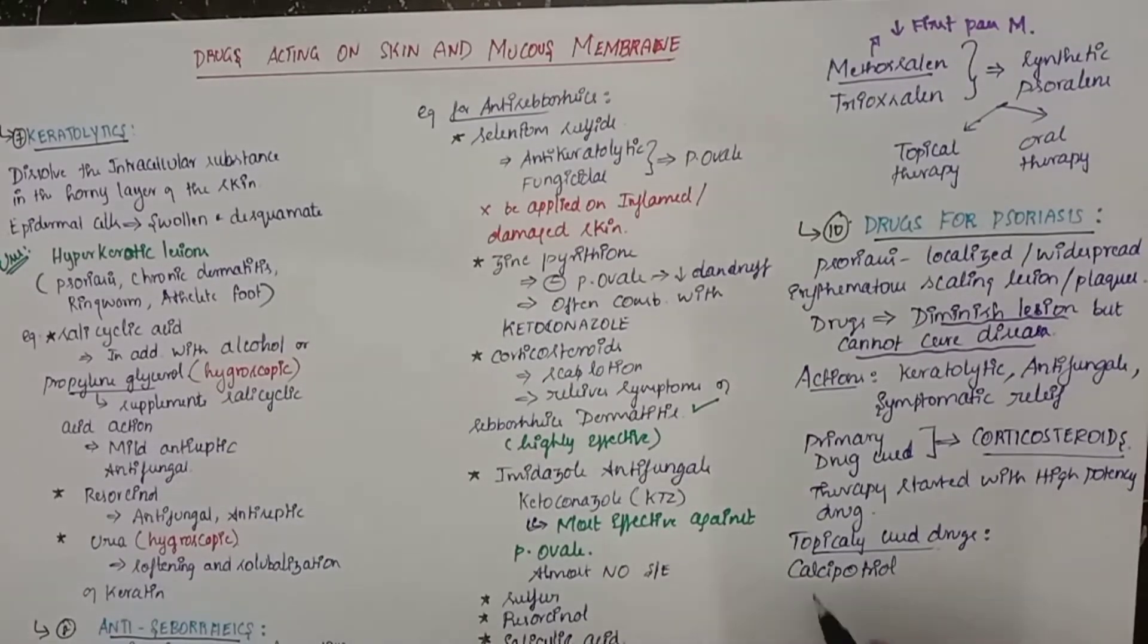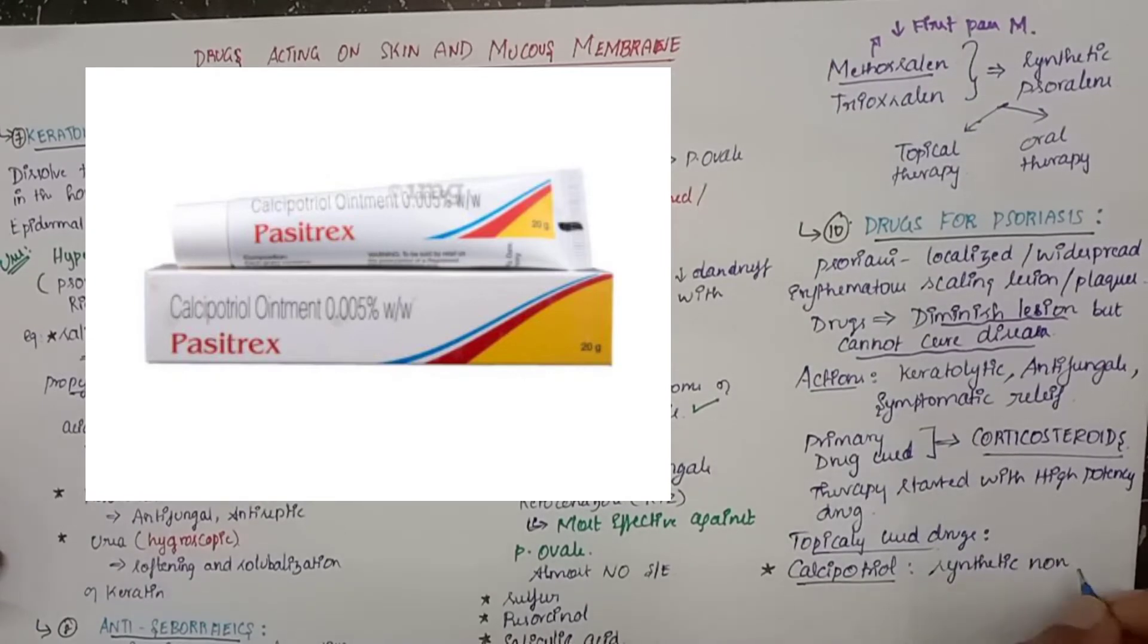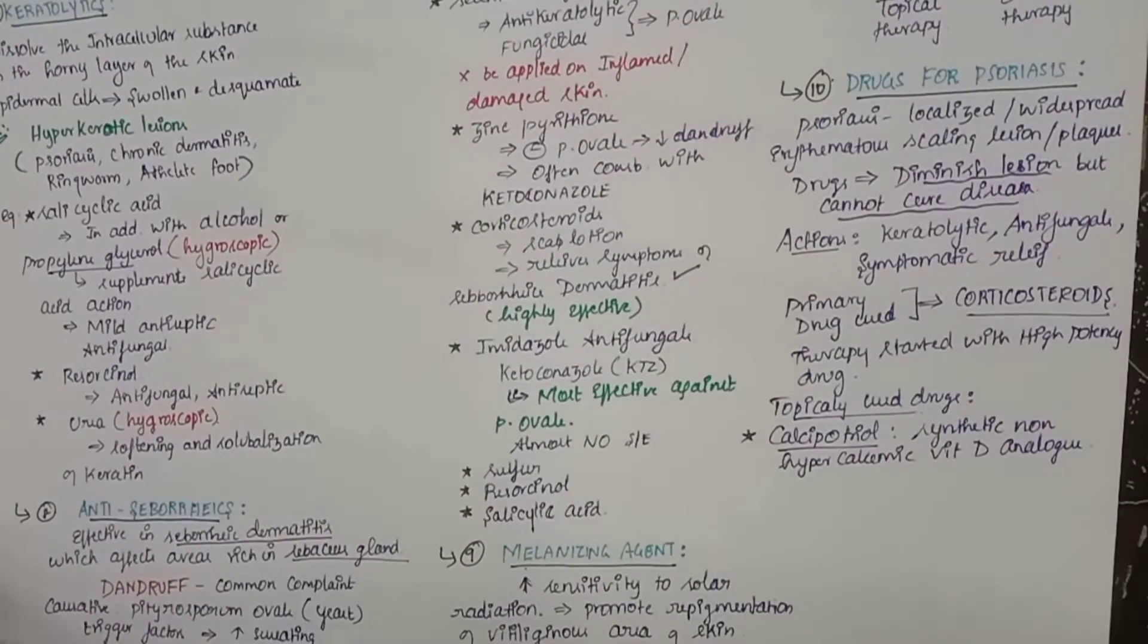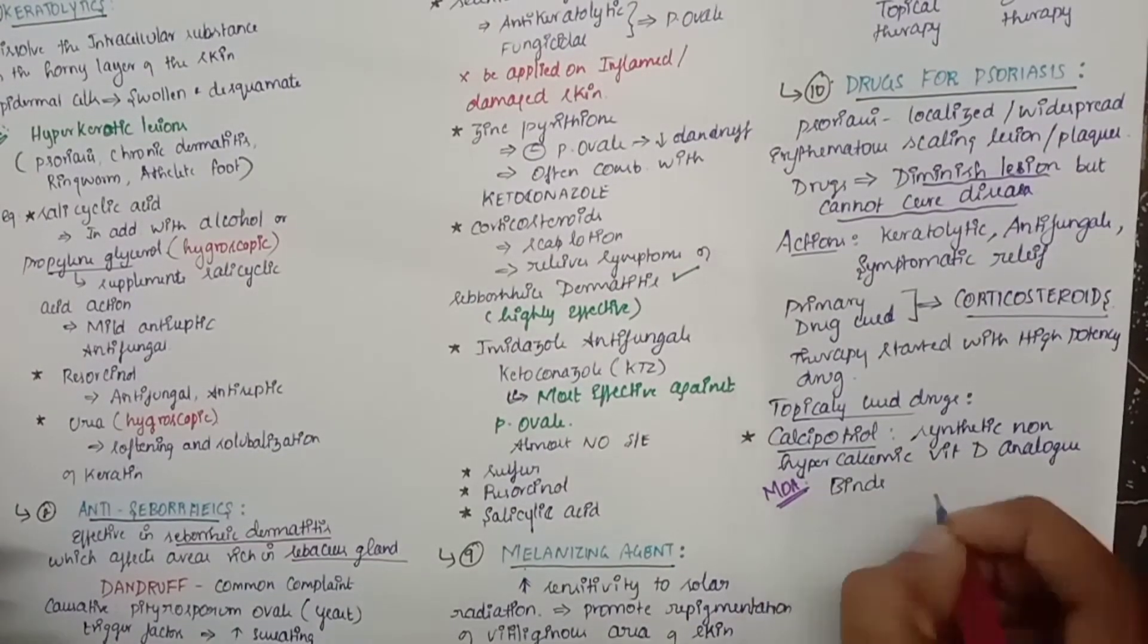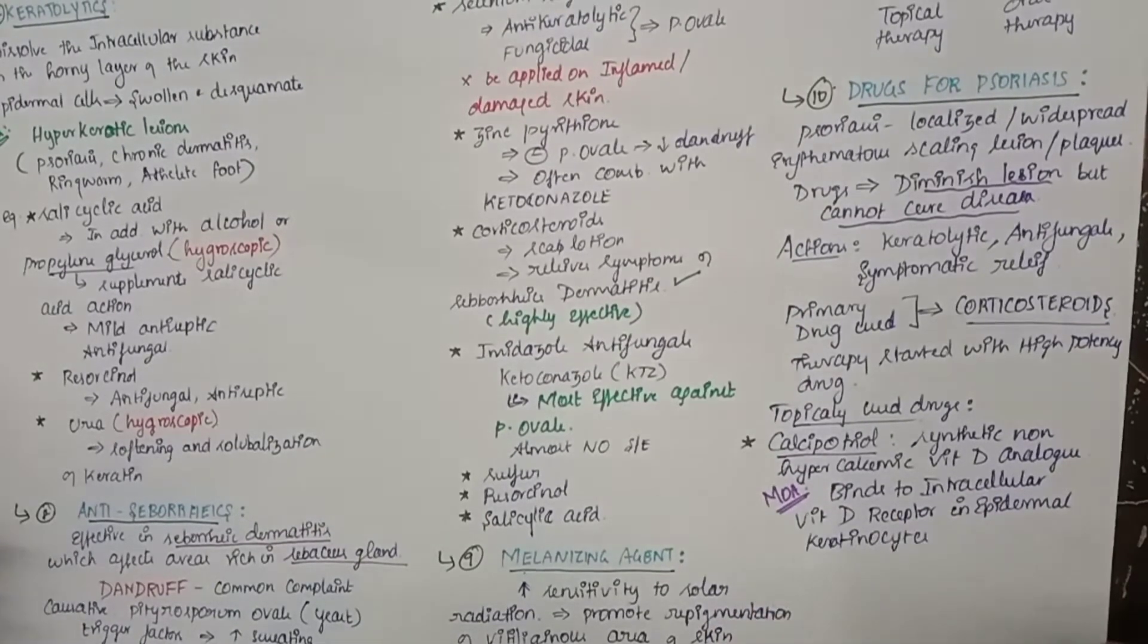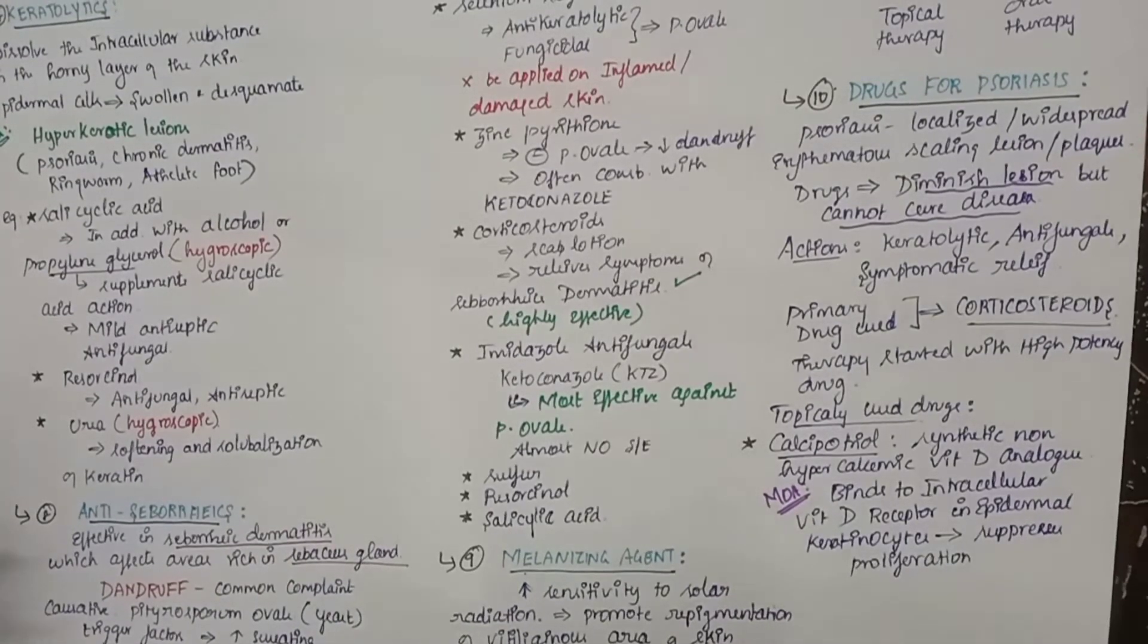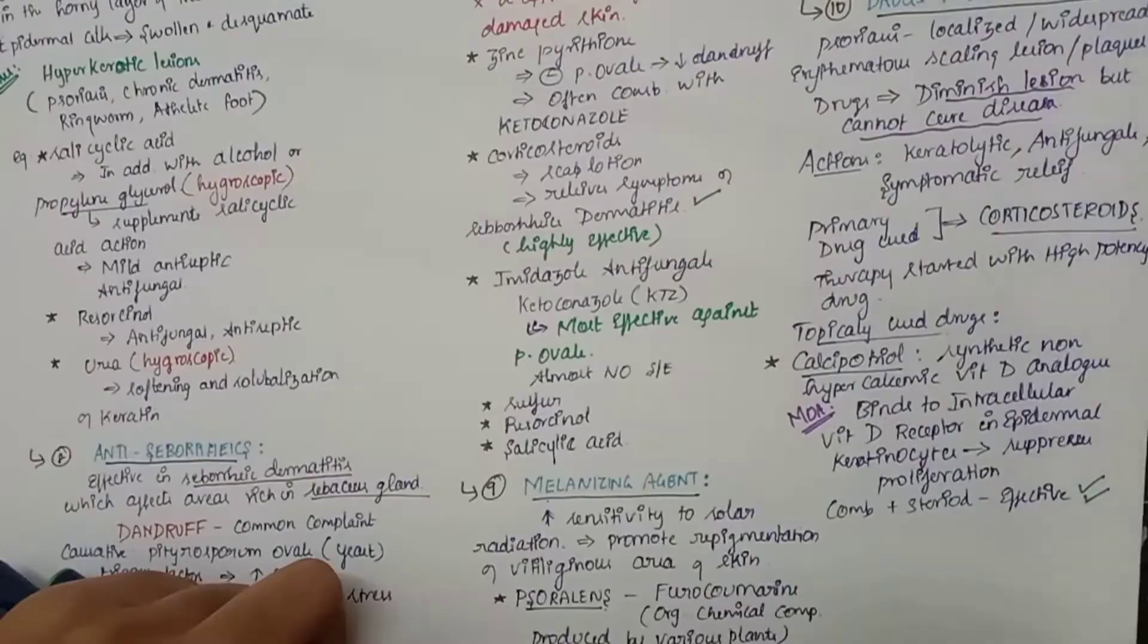Topically used drugs are calcipotriol. Calcipotriol is a synthetic non-hypercalcemic vitamin D analog. The mechanism of action is it binds to the intracellular vitamin D receptor in epidermal keratinocytes. Then it suppresses the proliferation of the keratinocytes, and this drug is combined with steroid, which is more effective.